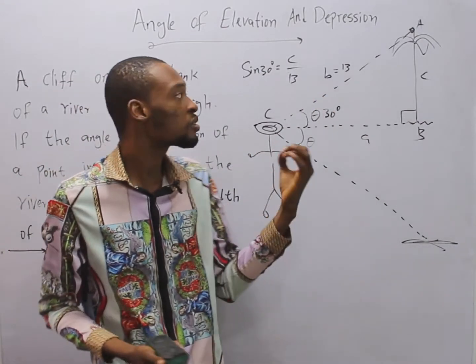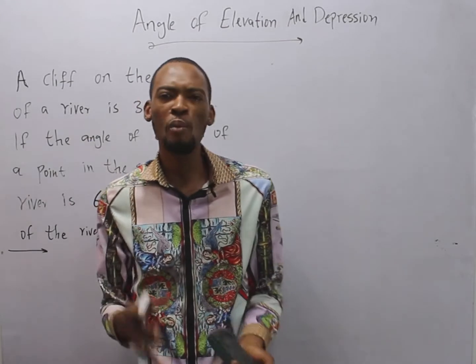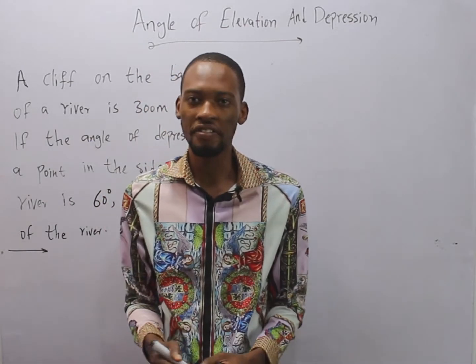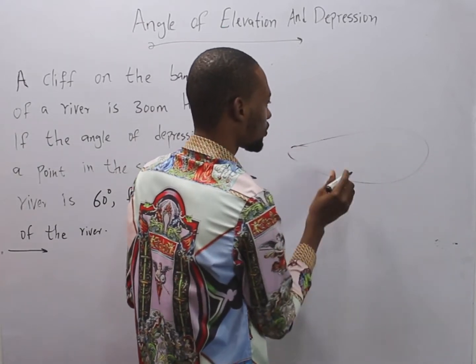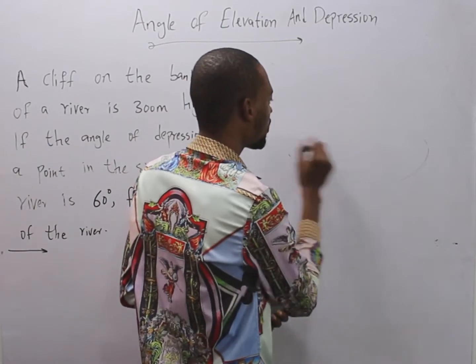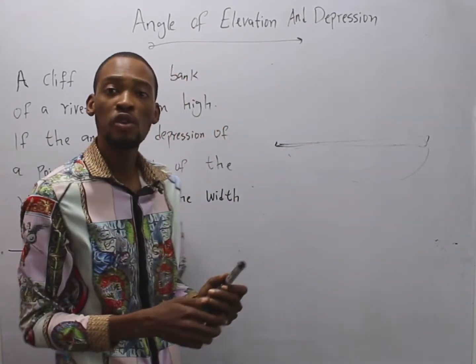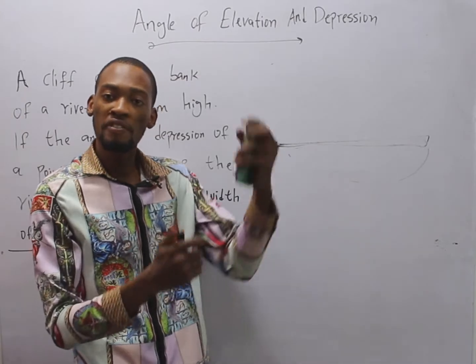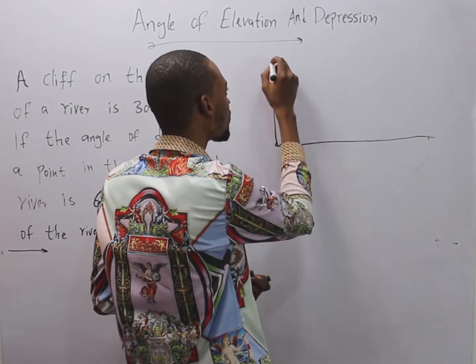Now, angle of elevation and depression are a way of solving triangles. This question says: 'A cliff on the bank of a river.' You may wonder what a cliff is. If this is a river, you know those tall, steep rocks on top of or close to the river — that's what is referred to as a cliff.